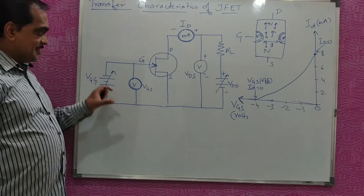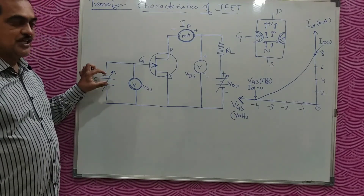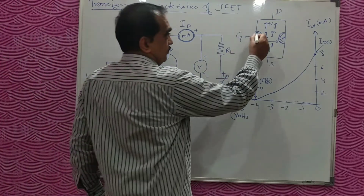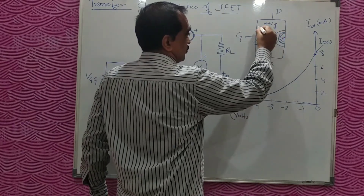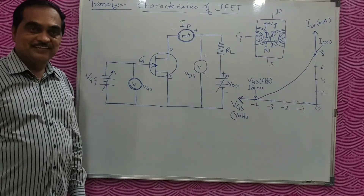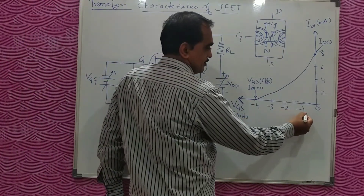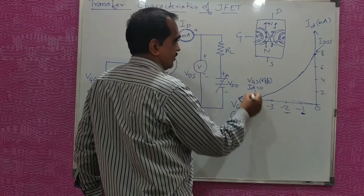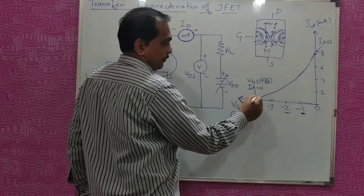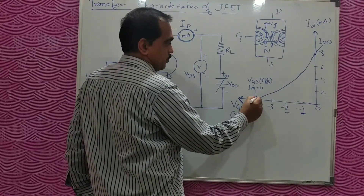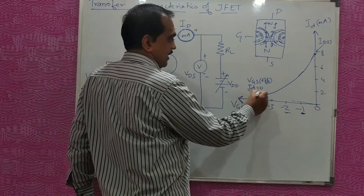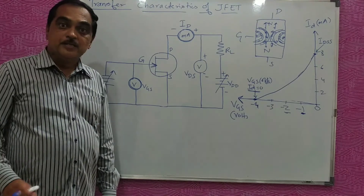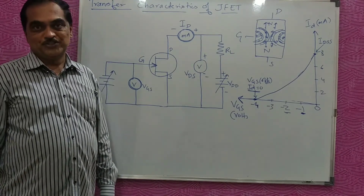As you increase this reverse bias voltage, the depletion layer of both PN junctions increases and the flow of current goes on decreasing. As shown in the graph, increasing reverse bias from minus 1 to minus 2 decreases current, then at minus 3 it decreases further, and at one stage the channel width is such that there is no flow of current. That VGS is your cut-off VGS where output current ID becomes zero.